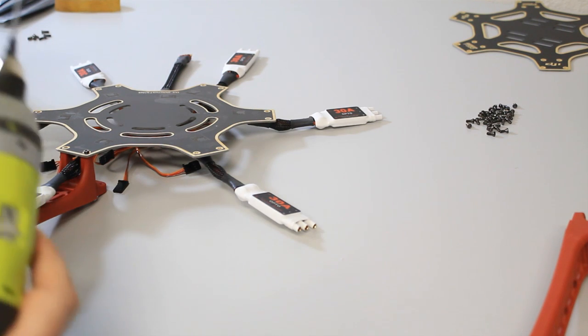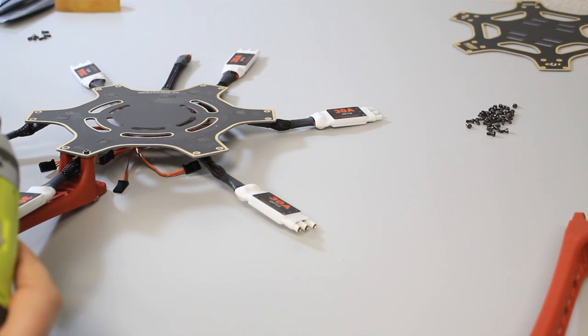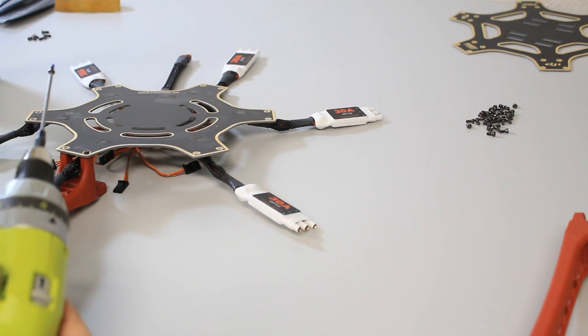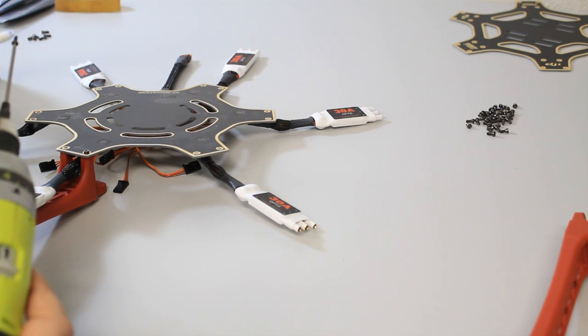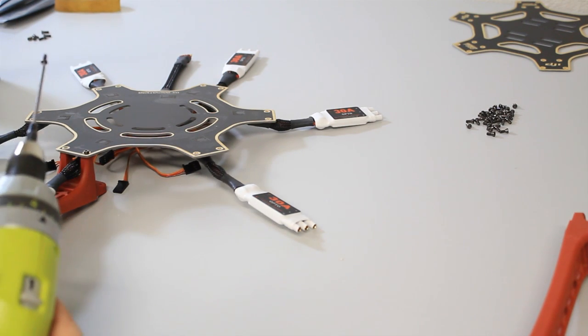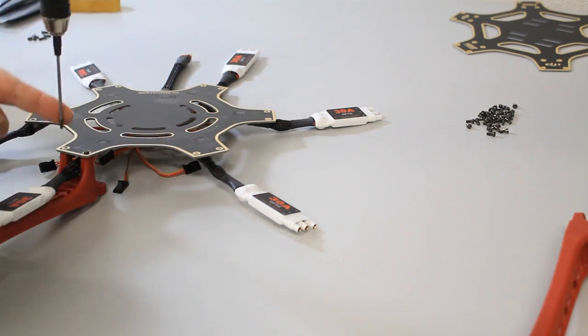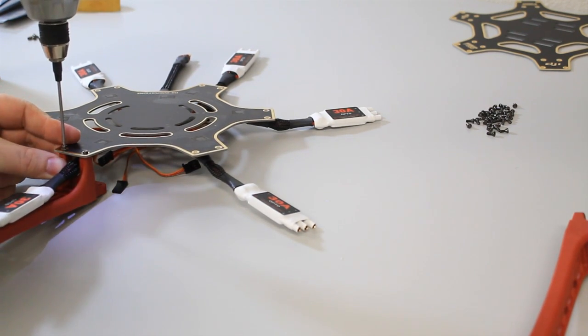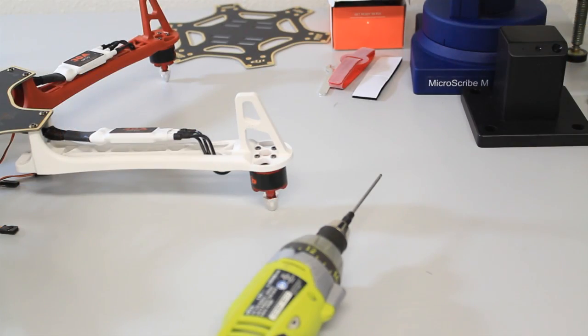You don't have to crank it down all the way just yet. I want thread lock, but at the same time, I don't want it spewing out and getting all over the frame. There's the bottom piece.